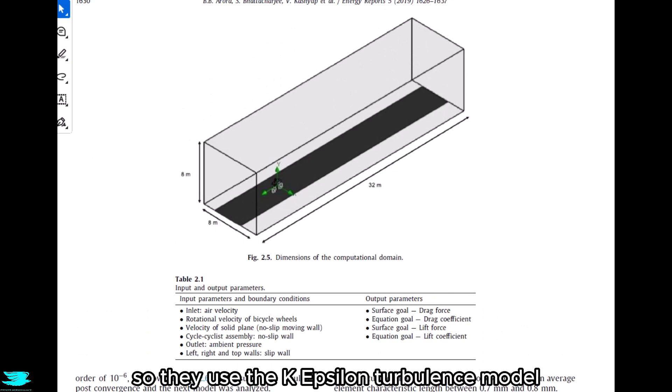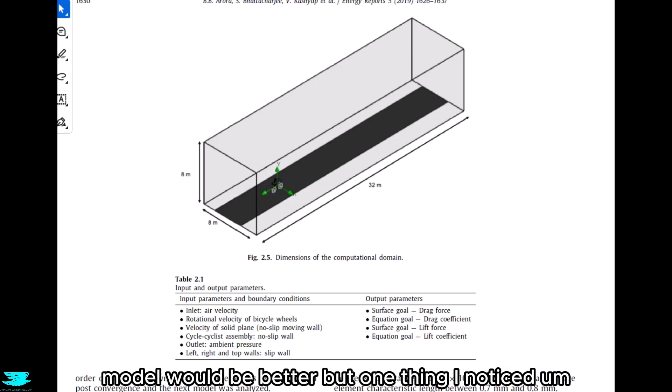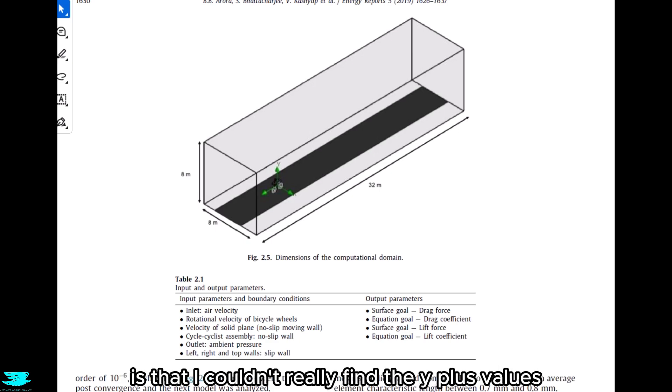They used the K-Epsilon turbulence model, which wouldn't be my choice either. It's fine, but the K-Omega SST model would be better. But one thing I noticed is that I couldn't really find the Y-plus values reported. That is an important point because the K-Epsilon turbulence model works best between Y-plus values of around 30 up to about 300. Whether their mesh falls in that range or not is a mystery to me. If they used the K-Omega SST model, even if they didn't report the Y-plus value, it would probably still be fine because the model can handle values from anywhere like 1 or less, up to about 300 or so.